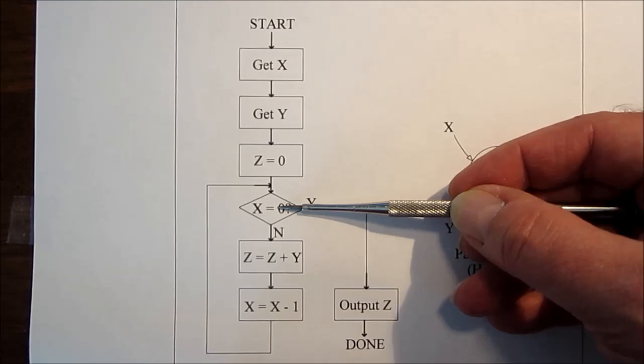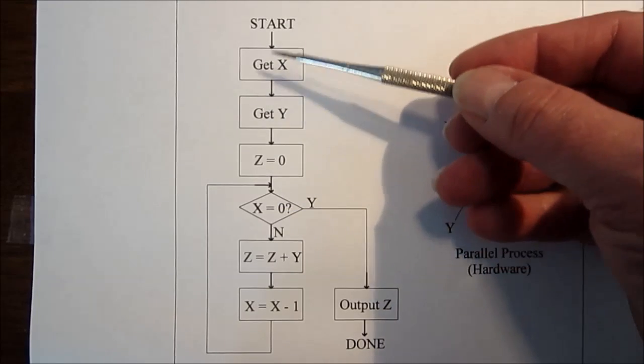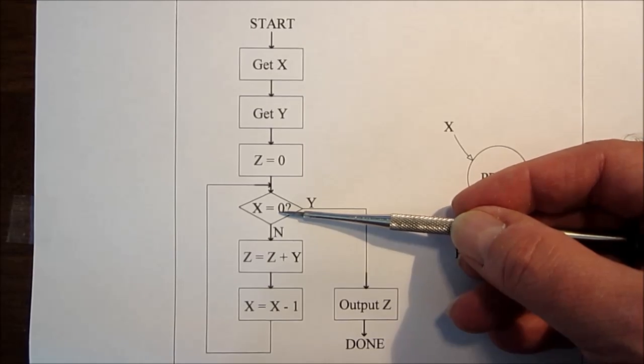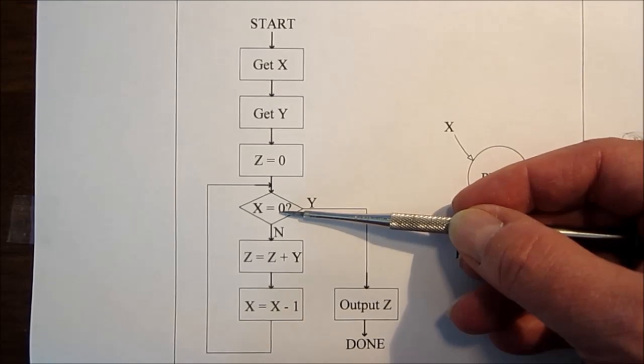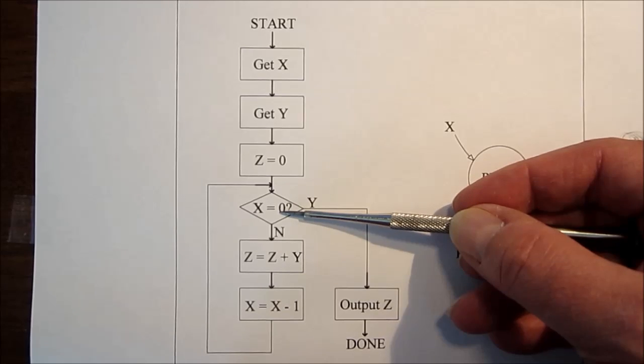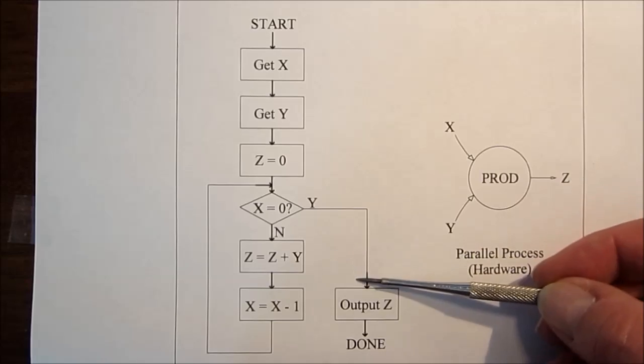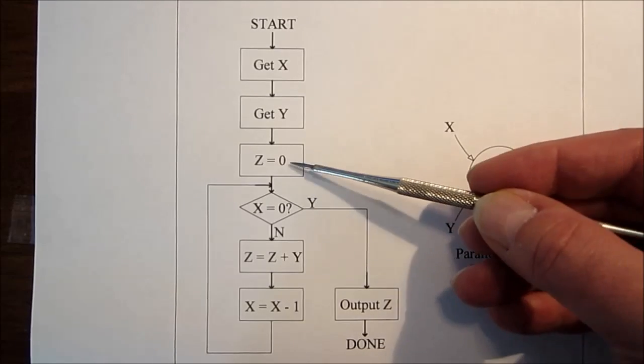Then we do a decision to see if either one of these, let's say x, if x is equal to zero, then the answer, regardless of what the other digit is going to be, is going to be zero. So we're basically done. We output z, and we're done, because z is already set to zero.